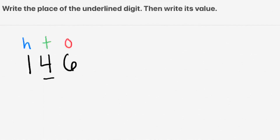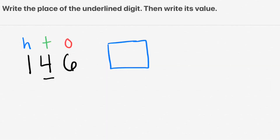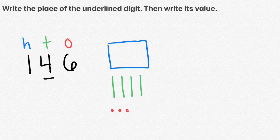Now we will begin drawing it out. There's a 1 in the 100s place, so we need to draw 100. There's a 4 in the 10s place, so we need to draw 4 tens: 1 ten, 2 tens, 3 tens, 4 tens. There's a 6 in the 1s place, so we need 6 ones: 1, 2, 3, 4, 5, 6.